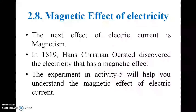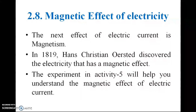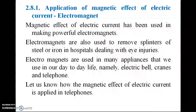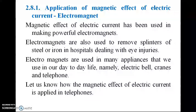The magnetic effect of electricity: in 1819, Hans Christian Ørsted discovered that electricity has a magnetic effect. The magnetic effect of electric current has been used to create powerful electromagnets. Electromagnets are used in hospitals to remove splinters of steel or iron from injuries, and are also used in everyday appliances such as electric bells, cranes, and telephones.